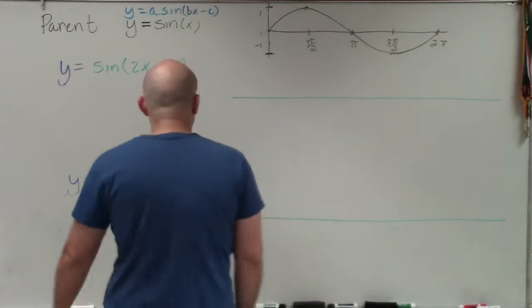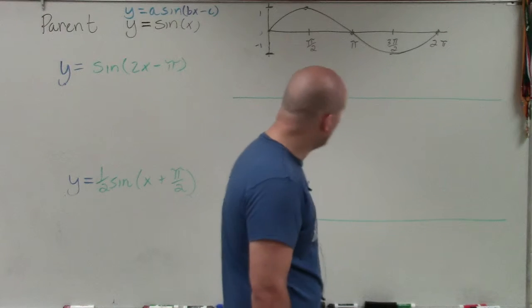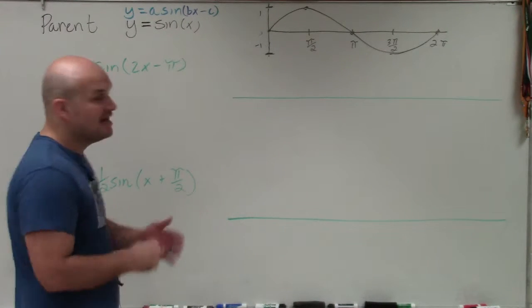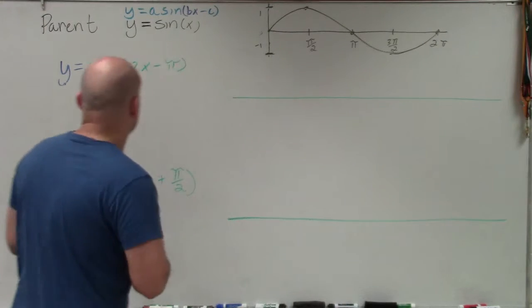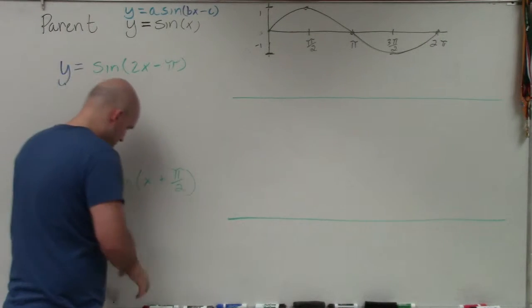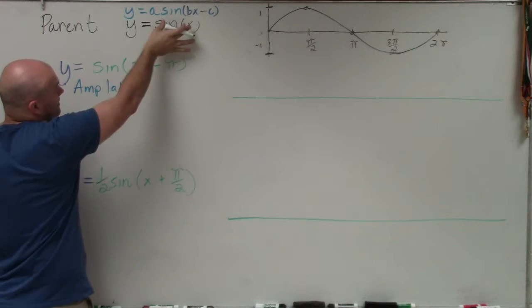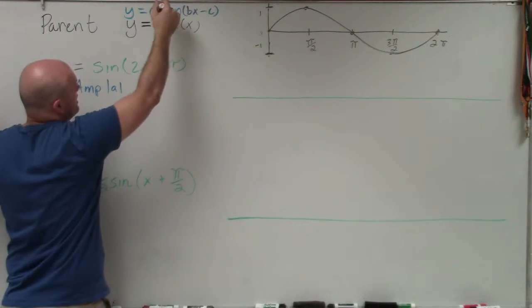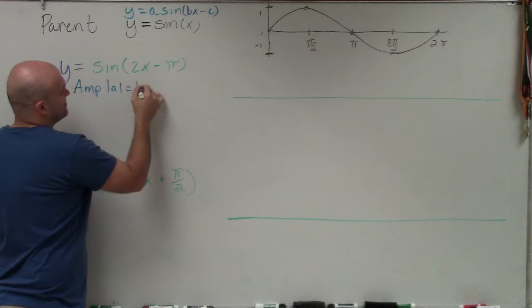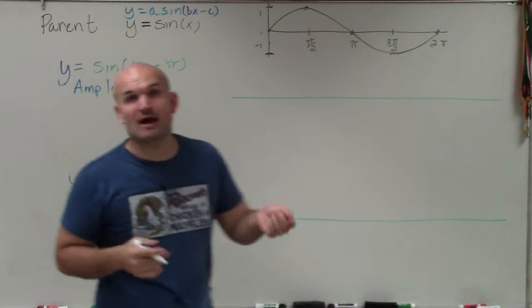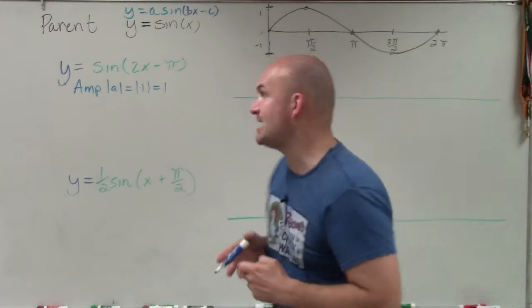In this case, I have y equals sine of 2x minus pi. What I'm going to be doing is first identifying the amplitude, the period, as well as the x scale. Amplitude is the absolute value of a. I also wrote in the parent graph y equals sine of x, so you can see where a, b, and c are coming from. The amplitude is the absolute value of 1, so it's just going to be 1. Since I have no vertical translation, my graph is going to go from 0 up to 1 and down to negative 1 — that's the maximum and the minimum.